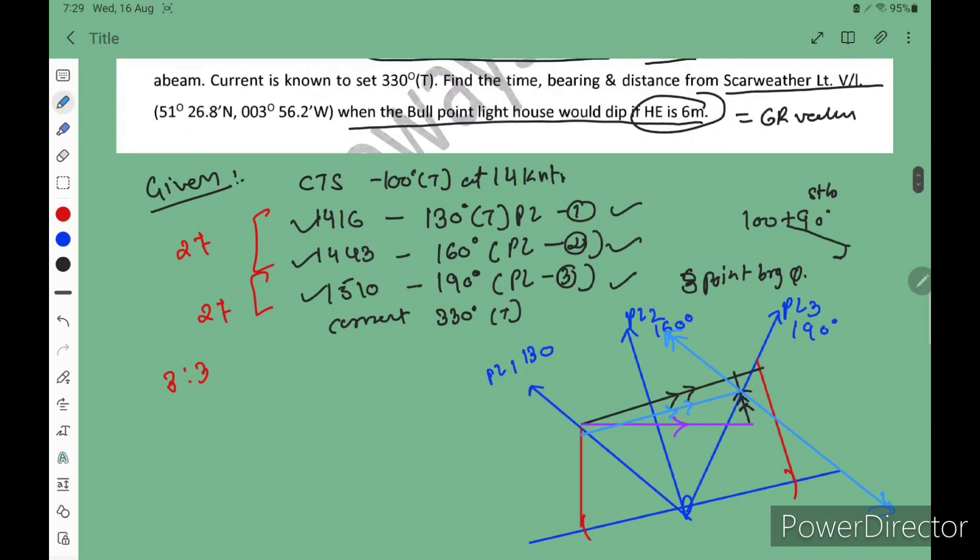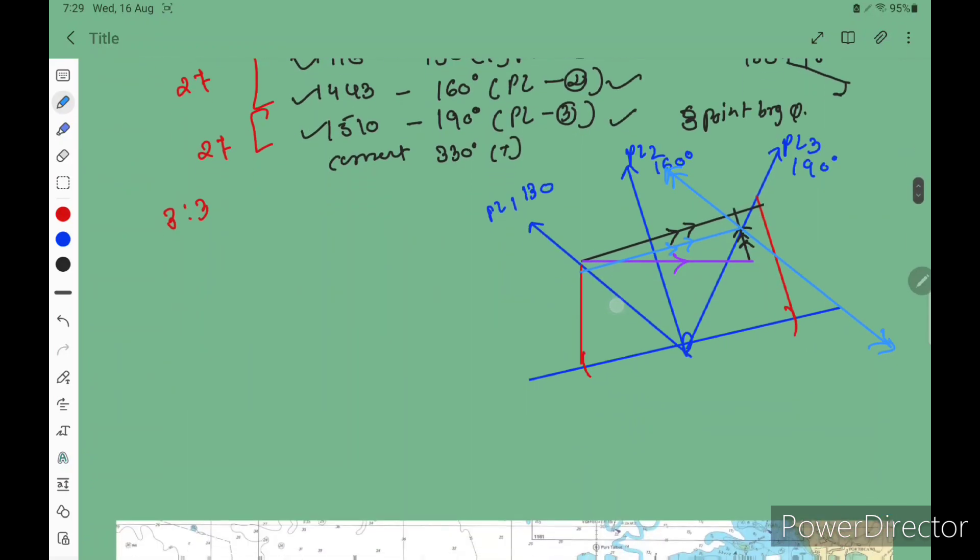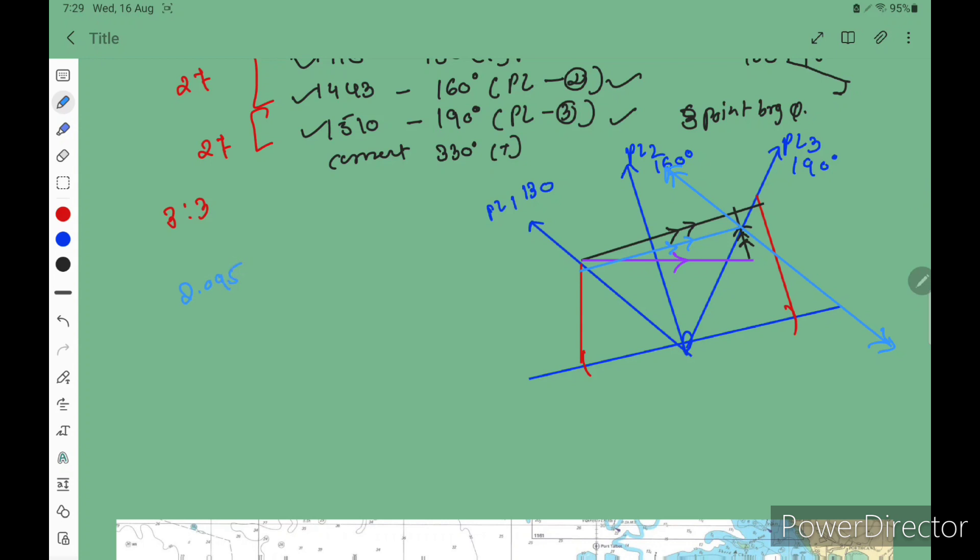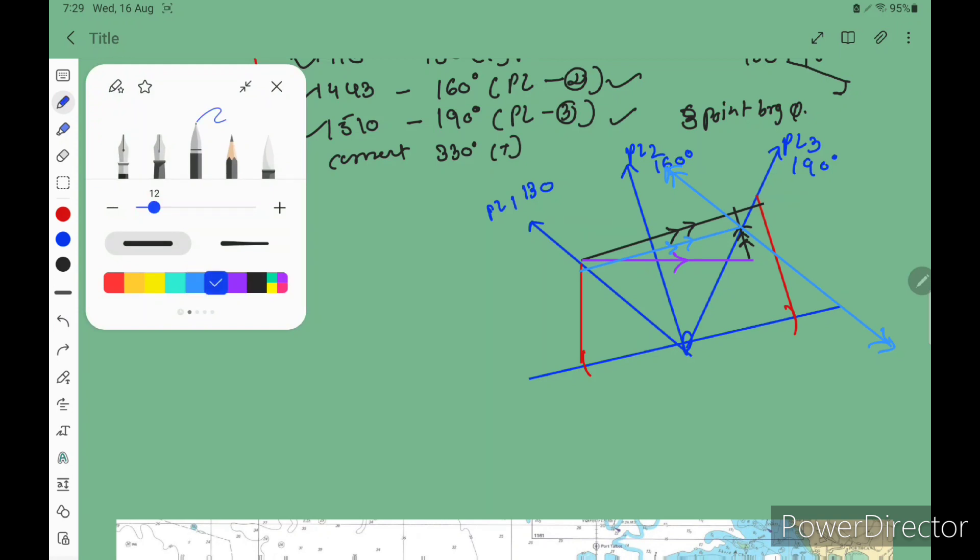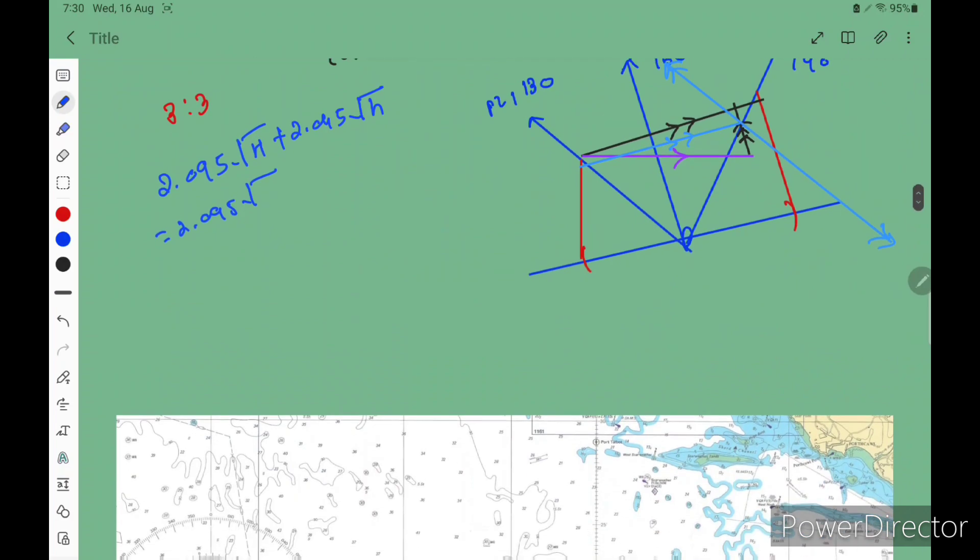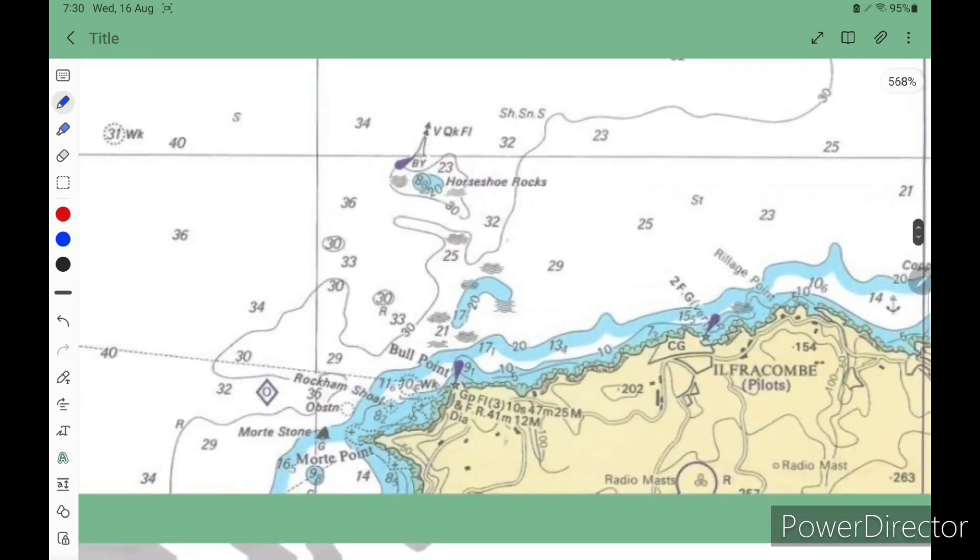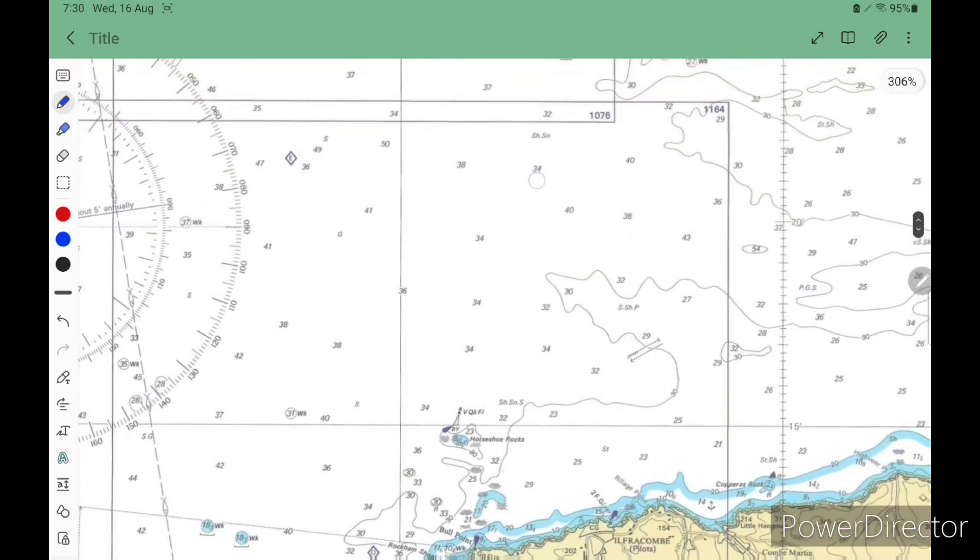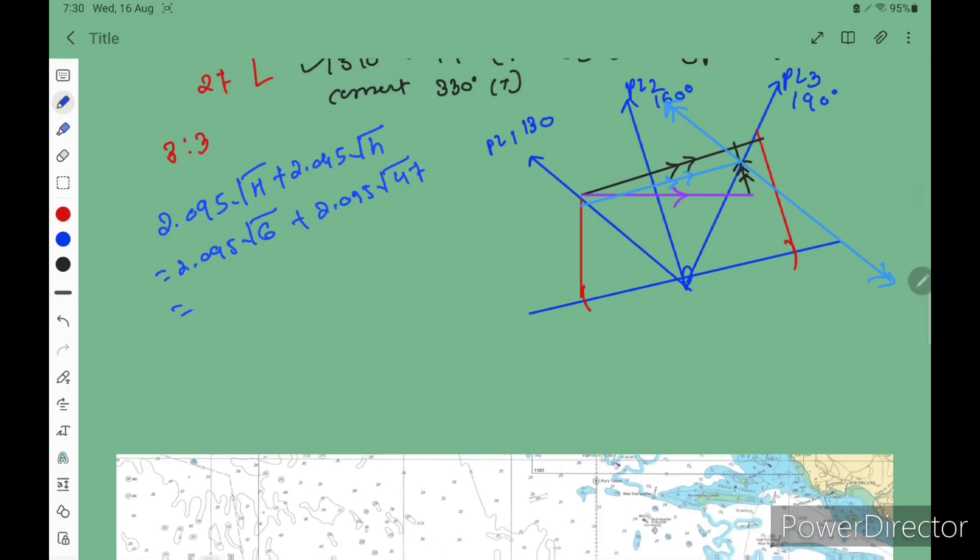Now you have to calculate your GR. So GR value when we calculate, the formula is 2.095 under root height of I plus 2.095 under root h. So 2.095 under root, height of I given 6 meters, plus 2.095 under root 47 was given. So when you calculate you will get 19.49 nautical miles.